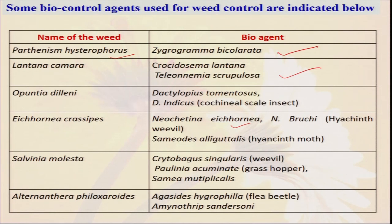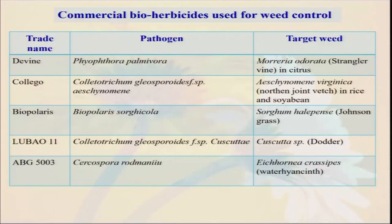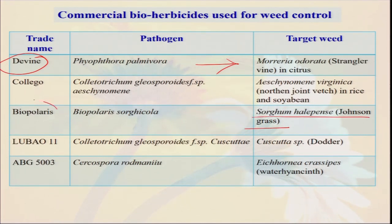There are also some commercial bioherbicides. In organic farming we cannot use any chemically produced herbicide, but we can use some biological organisms. When these biological organisms are available in a bottle or fresh solution, it is called a bioherbicide. For the pathogen Phytophthora palmivora, the trade name is DeVine, and this DeVine helps to control one weed that is Morrenia odorata. Similarly, for controlling Sorghum halepense — also called Johnsongrass — the pathogen Bipolaris sorghicola has been produced as a bioherbicide. They infect the weed and make some disease in the weeds, so they reduce the weed population and weed damage. Similarly, there is also Lubao 11, ABG 5003, and Collego. Collego contains Colletotrichum gloeosporioides f. sp. aeschynomene, and it controls Aeschynomene virginica — that is Northern joint vetch in rice and soybean.